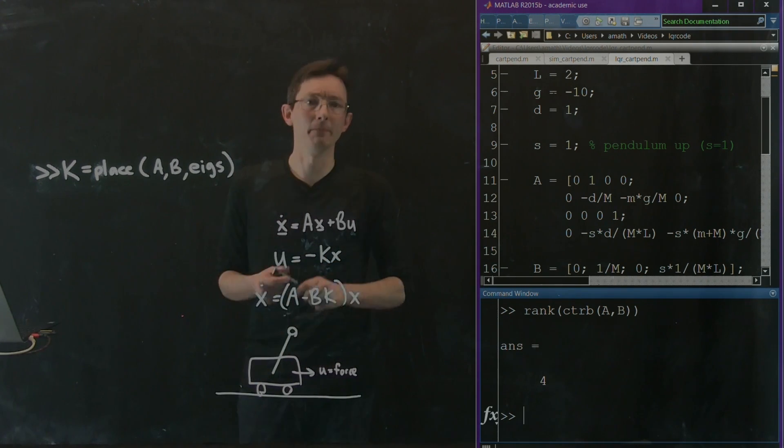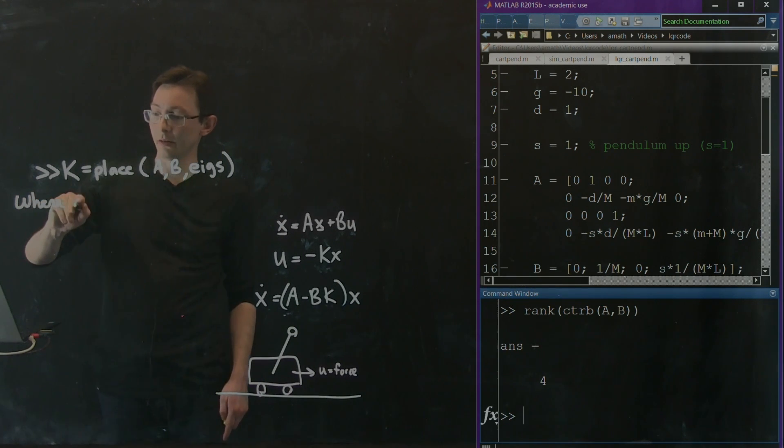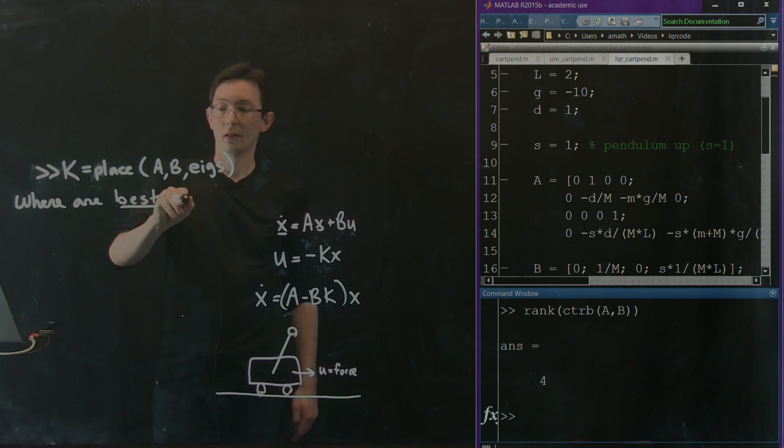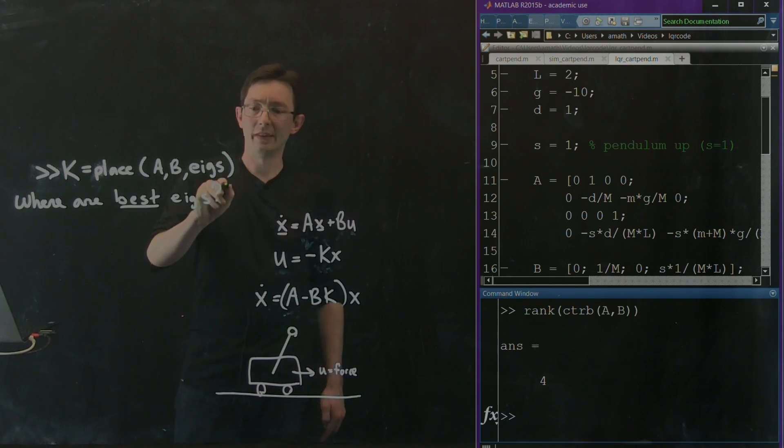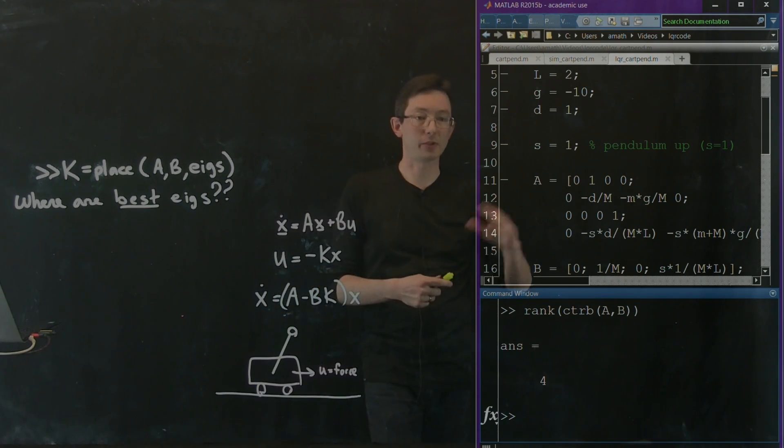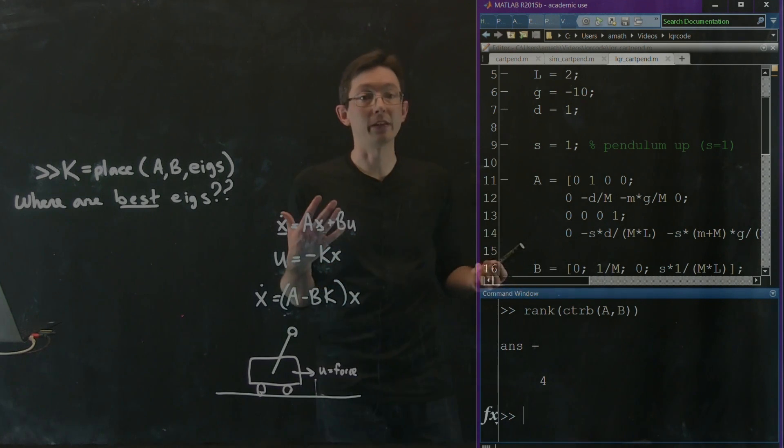But it begs the question, where do we place the poles? Where do we place eigenvalues? Where are the best eigs? And that's a really interesting kind of open-ended question. You could spend a long time trying lots of different combinations of eigenvalues, and how do you know when you found the best one?